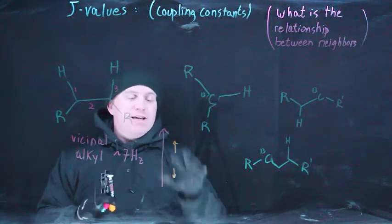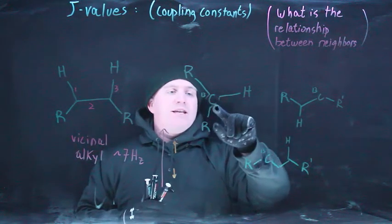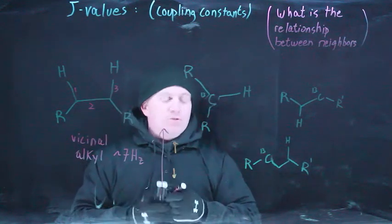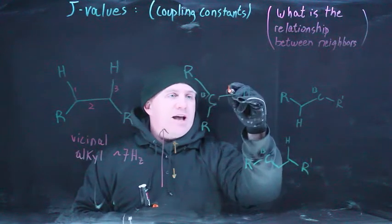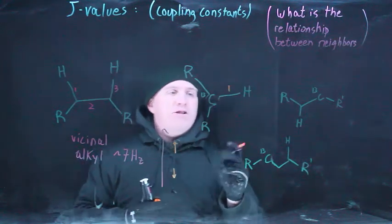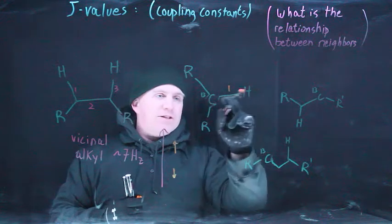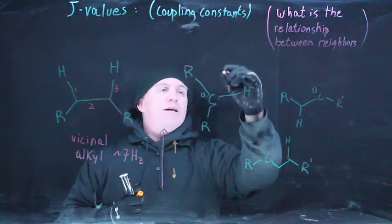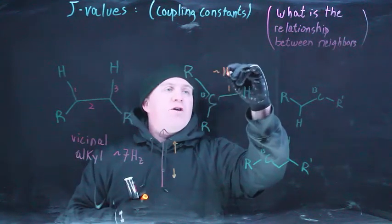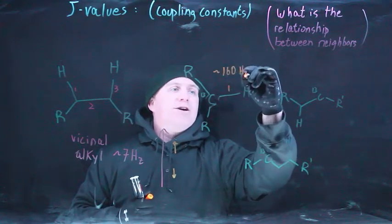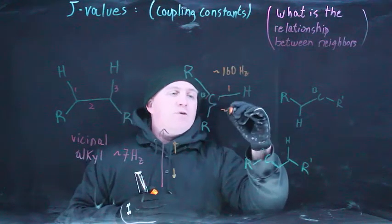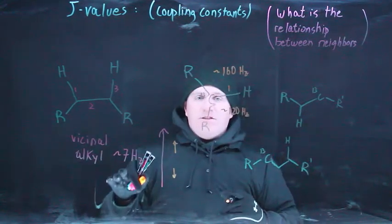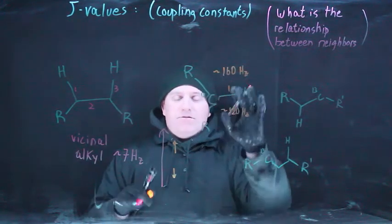When I first introduced this image, what I was talking about was how you had C13s interacting with the hydrogen that they are actually bound to. In this particular case, you'd be talking about a hydrogen that is actually on the carbon of interest, and therefore there's a one bond relationship between this hydrogen and this carbon. In the context of the C13 NMR, it turned out that these values were on the order of 160 Hz for most of the hydrogens we looked at, and in one case it was more like 120 Hz.